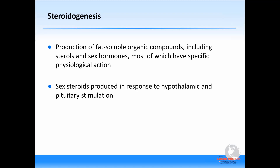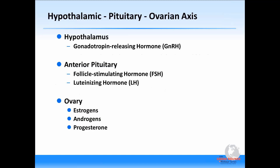What is steroidogenesis? Simply put, steroidogenesis is the production of fat-soluble organic compounds, including sterols and sex hormones, most of which have specific physiologic action. We are very familiar with the sex steroids — estrogen, progesterone, and the androgens — which are produced in the ovary in response to hypothalamic and pituitary stimulation.